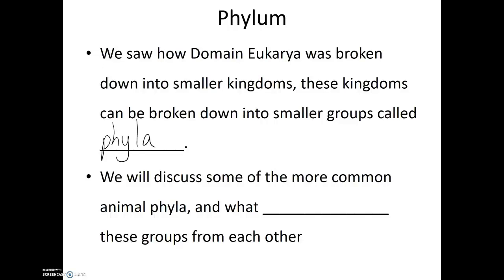This is one of those interesting Latin words in which the plural ends in an 'a', yet the singular ends in 'um'. So if we're talking about one, it's a phylum, but if we're talking about several, they are phyla. We will discuss some of the more common animal phyla and what distinguishes these groups from each other.